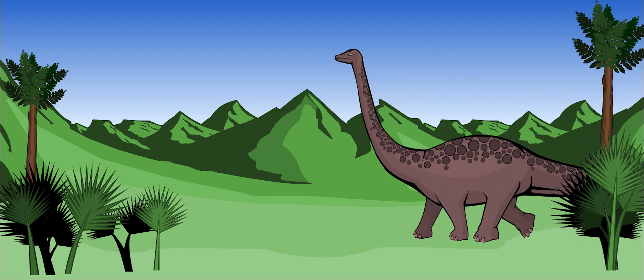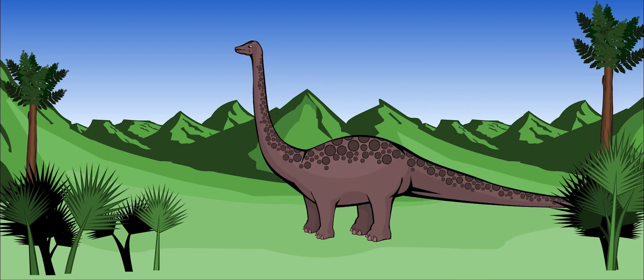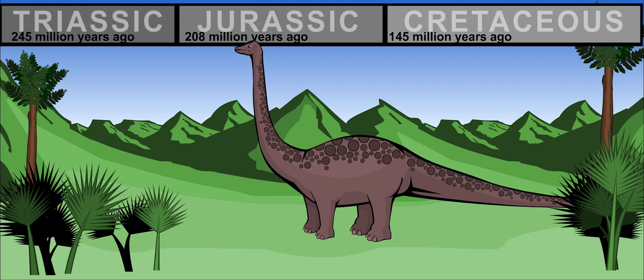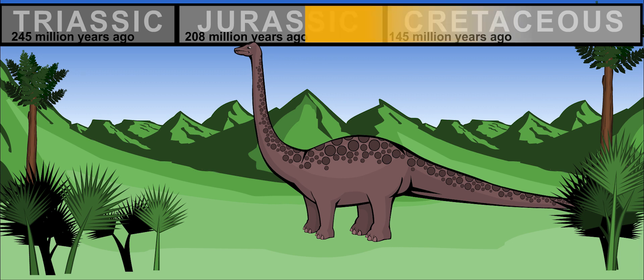Diplodocus was one of the largest sauropod plant-eaters during the Jurassic period. It lived between 155 and 145 million years ago.